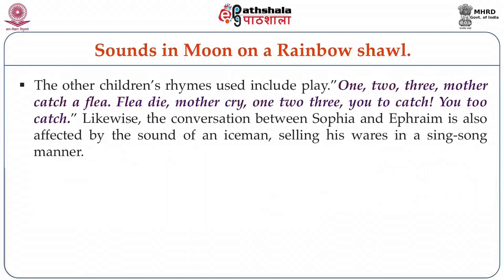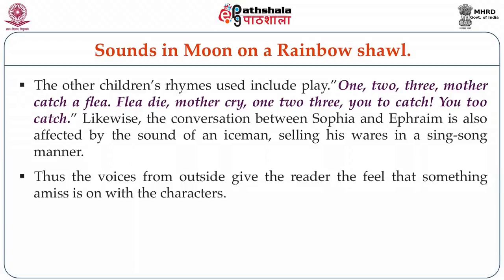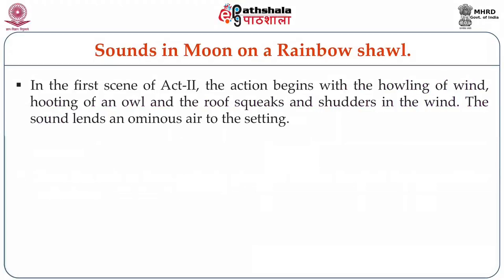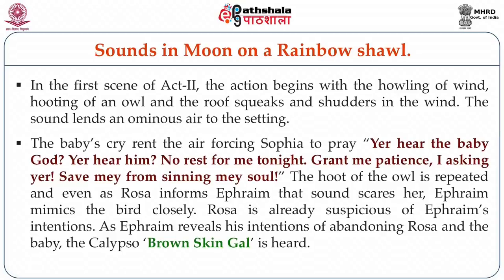Other children's rhymes include: '1, 2, 3, mother catch a flea, flea die, mother cry, 1, 2, 3, you too catch, you too catch.' Likewise, the conversation between Sophia and Ephraim is also affected by the sound of an iceman selling his wares in a sing-song manner. Thus, the voices from outside give the reader the feeling that something is amiss in the characters. In the first scene of Act 2, the action begins with the blowing of wind, hooting of an owl, and the roof squeaks and shudders. The sound lends an ominous air to the setting. The baby's cry forces Sophia to pray: 'Ye hear the baby, God, ye hear him. No rest for me tonight. Grant me patience, I am asking you. Save me from sinning my soul.'